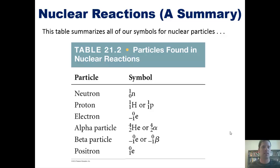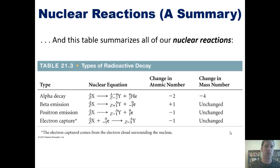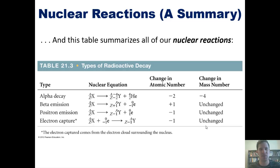This table from our text summarizes all of our symbols for nuclear particles discussed so far. Here's another table summarizing all our nuclear reactions: alpha decay, beta emission, positron emission, and electron capture. You're welcome to pause and review. That takes us to the end of this lecture. Please stay tuned to the next one, in which I'll begin teaching you about what makes an element radioactive or nuclearly unstable. Until next time, have a great rest of your day.